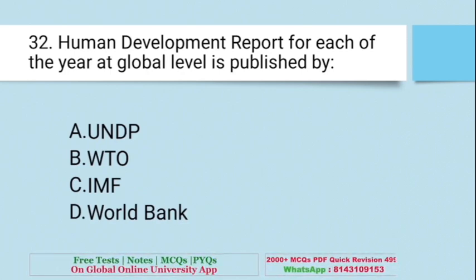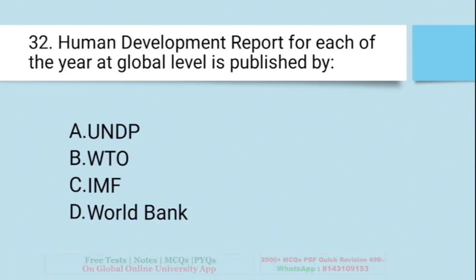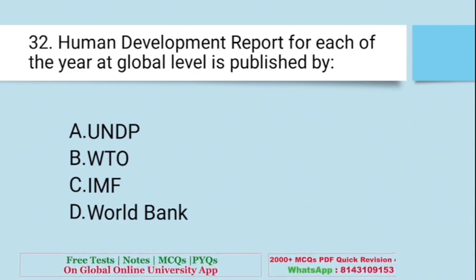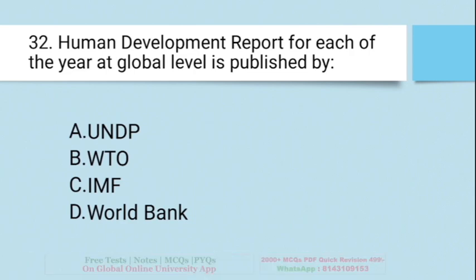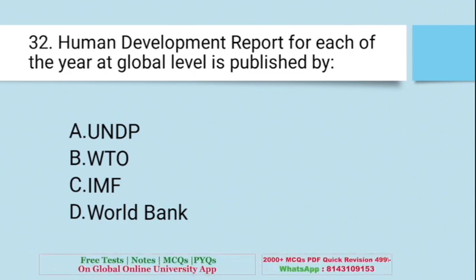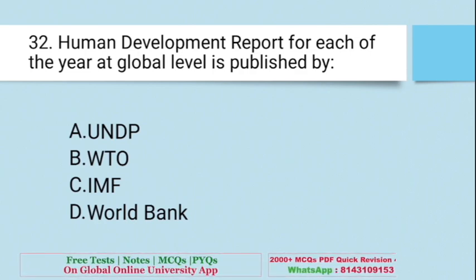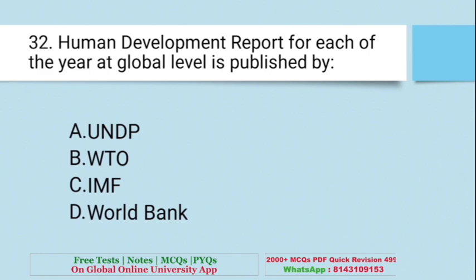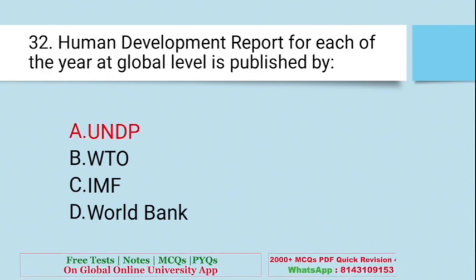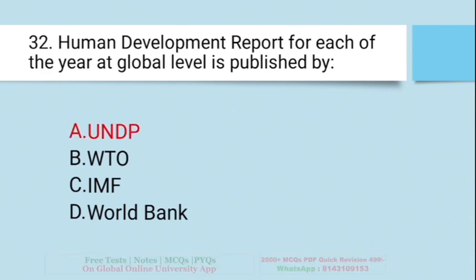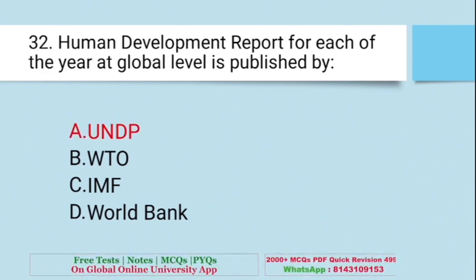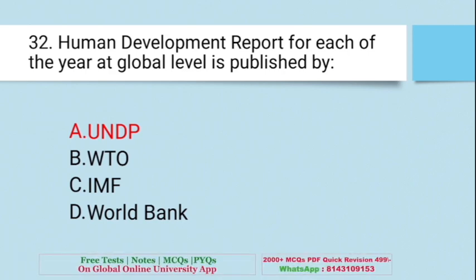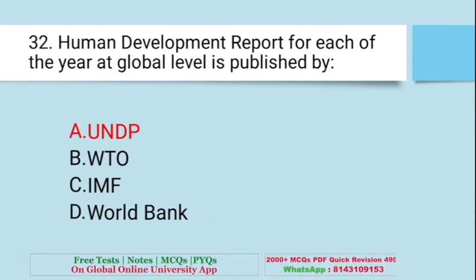Question: Human Development Report for each year at the global level is published by — UNDP, WTO, IMF, or World Bank? The right answer is UNDP. UNDP publishes the Human Development Report annually at the global level.